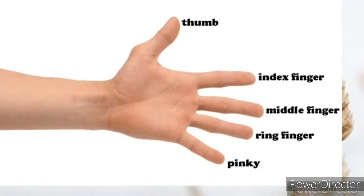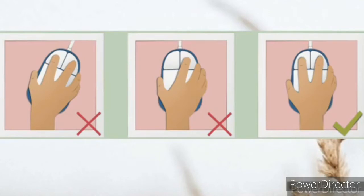Holding the mouse: Look at the names of the fingers given in the picture. We are going to use our thumb, index finger, and middle finger to use the mouse. So this is the correct way to hold the mouse.